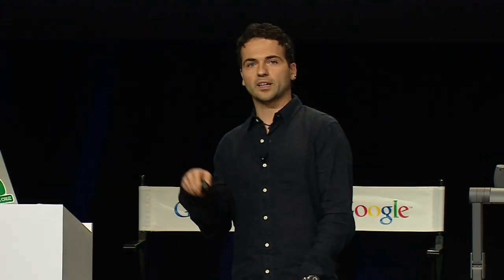There's another way you can use GCM. There's a new swell in the Pacific, and we want to tell every single user that in their particular favorite spot, the wave size is going to be six to eight foot. So we pack this data into the message and route it down to the application via GCM, and the application can consume the data right there without having to connect back.